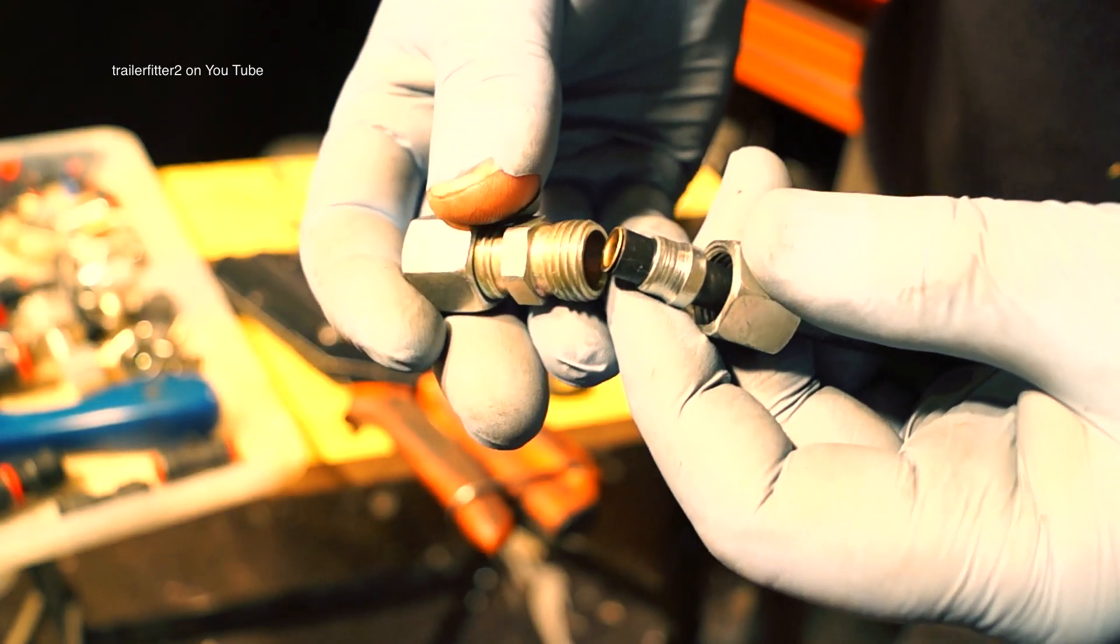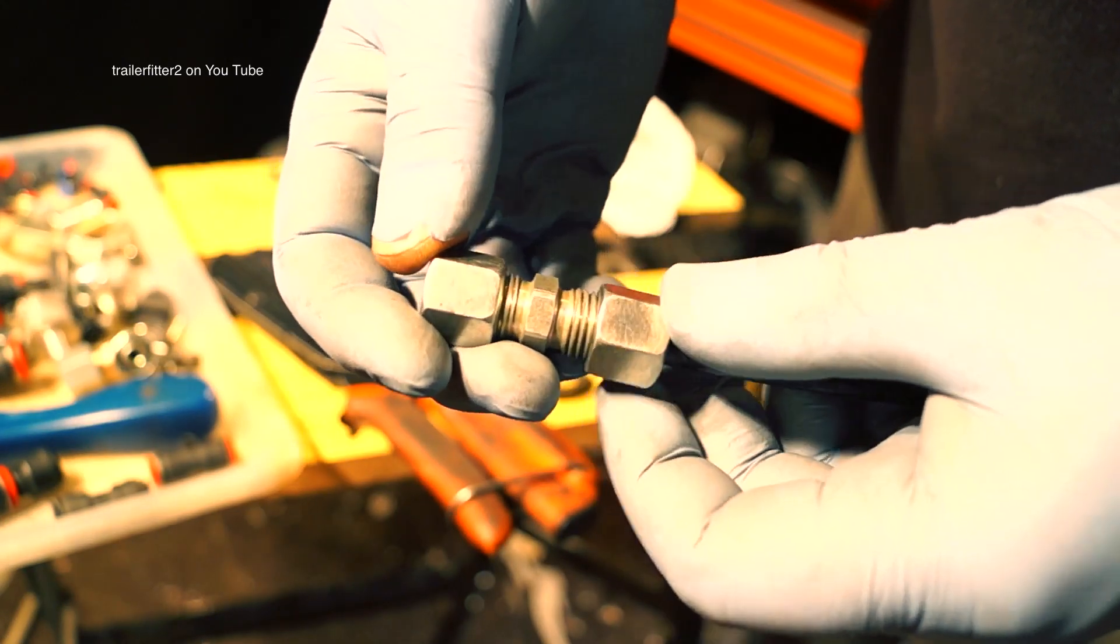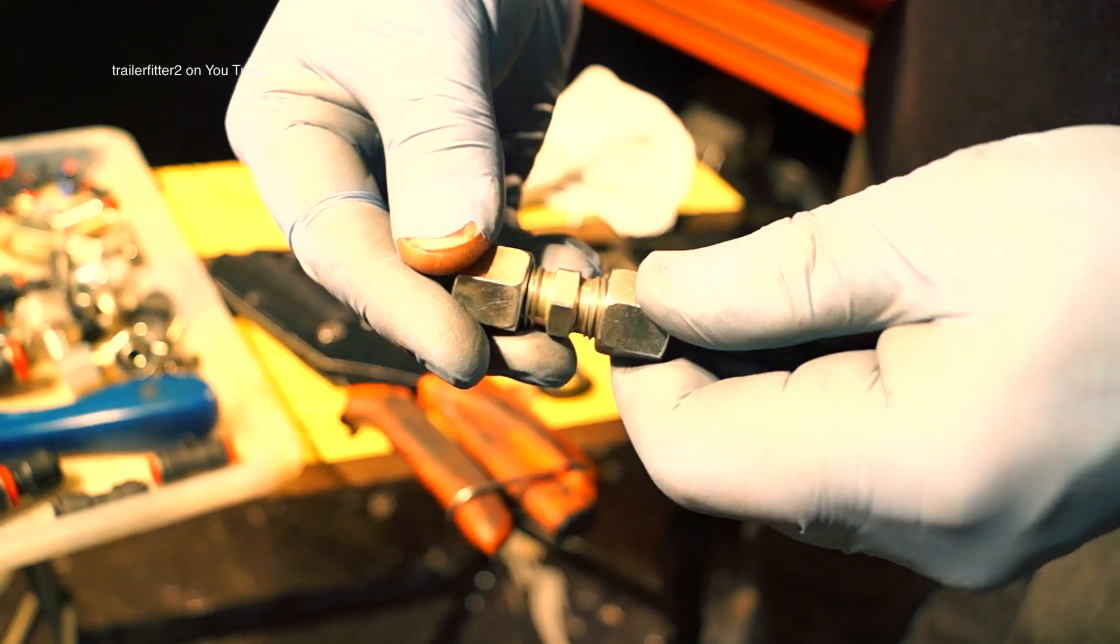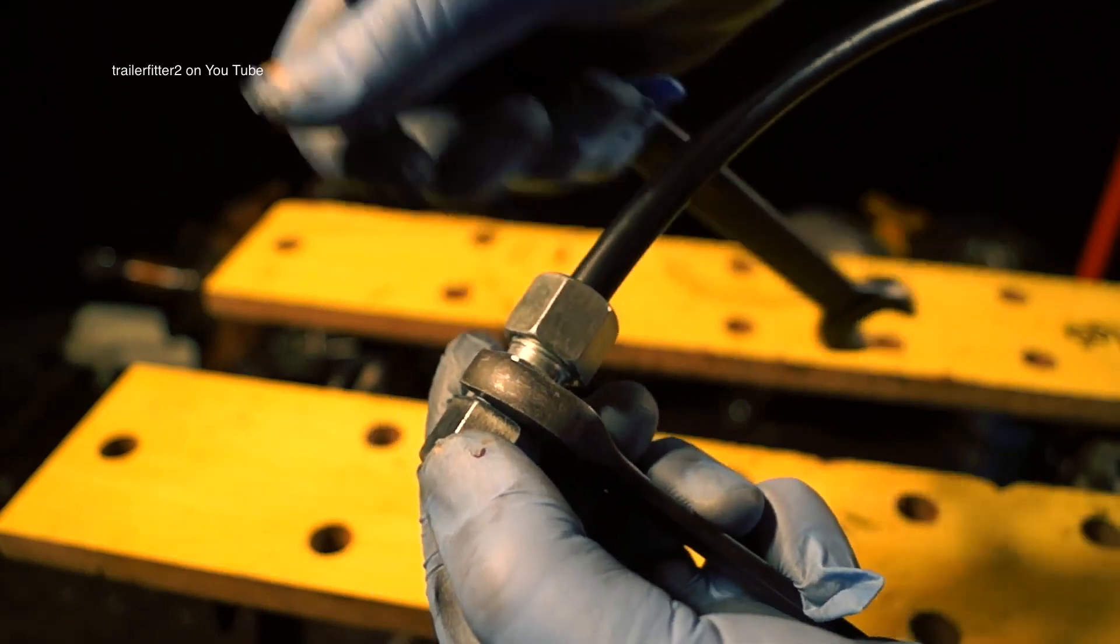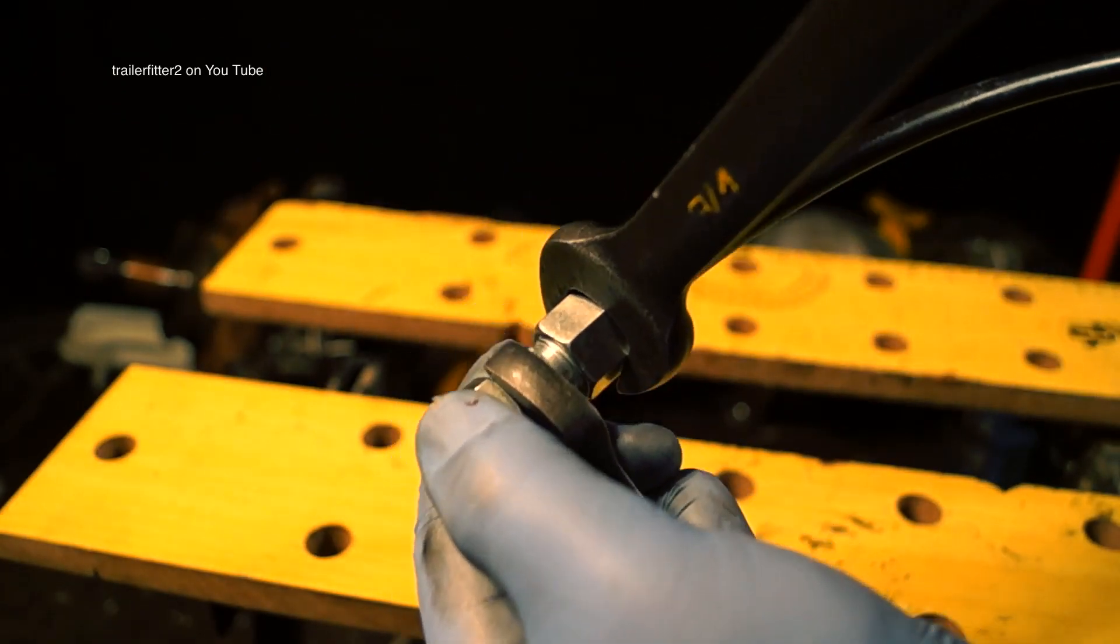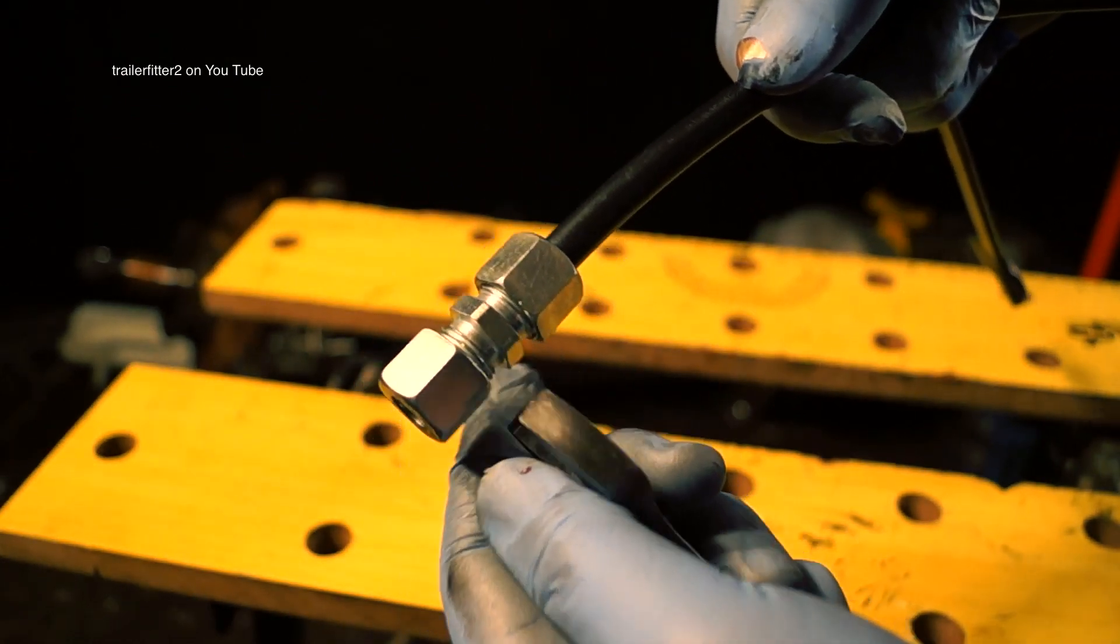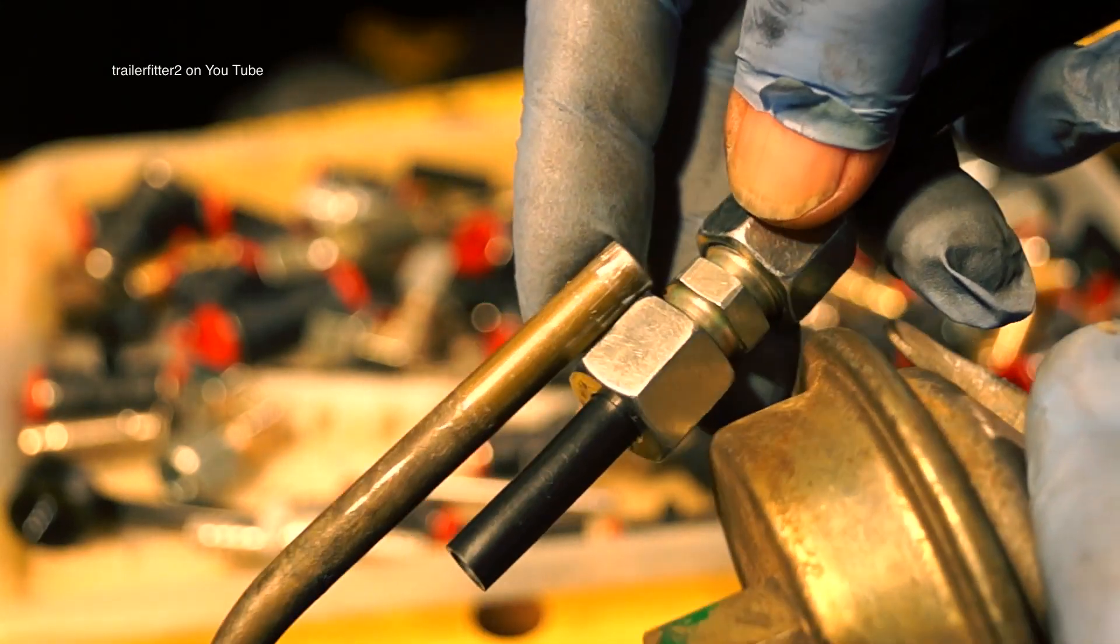The secret to these is that you need a ferrule inside the pipe tubing. Anything from 6mm upwards, so when the olive clamps down onto the piping, it will actually work properly. Otherwise they fail. With these, you nip them up and away you go. You have an air tight, or a diesel tight, or should I say fluid tight fitting. You can use them on steel tubing as well. They work quite well.